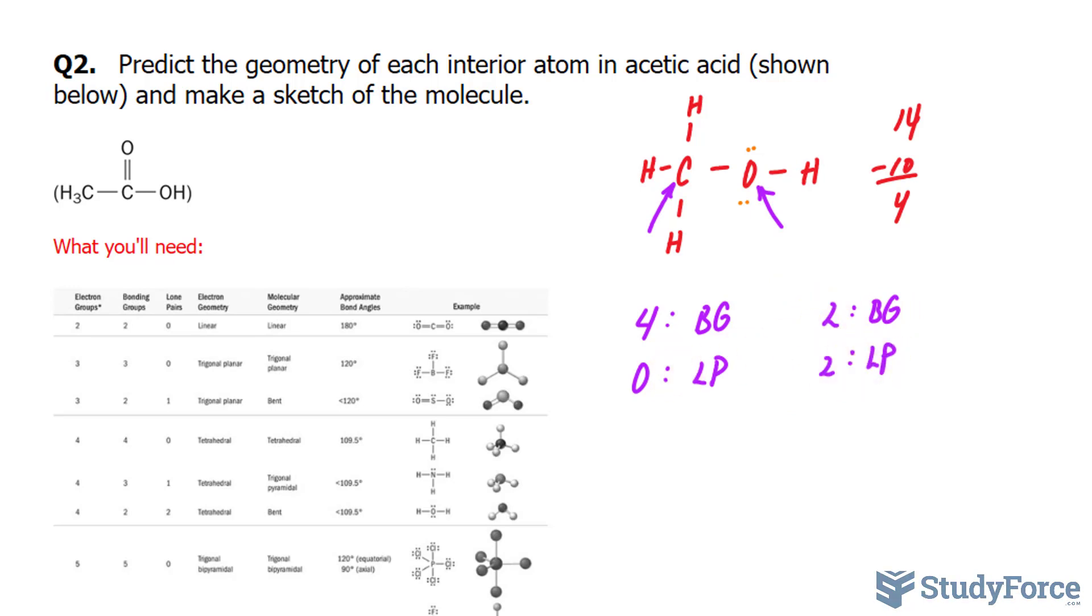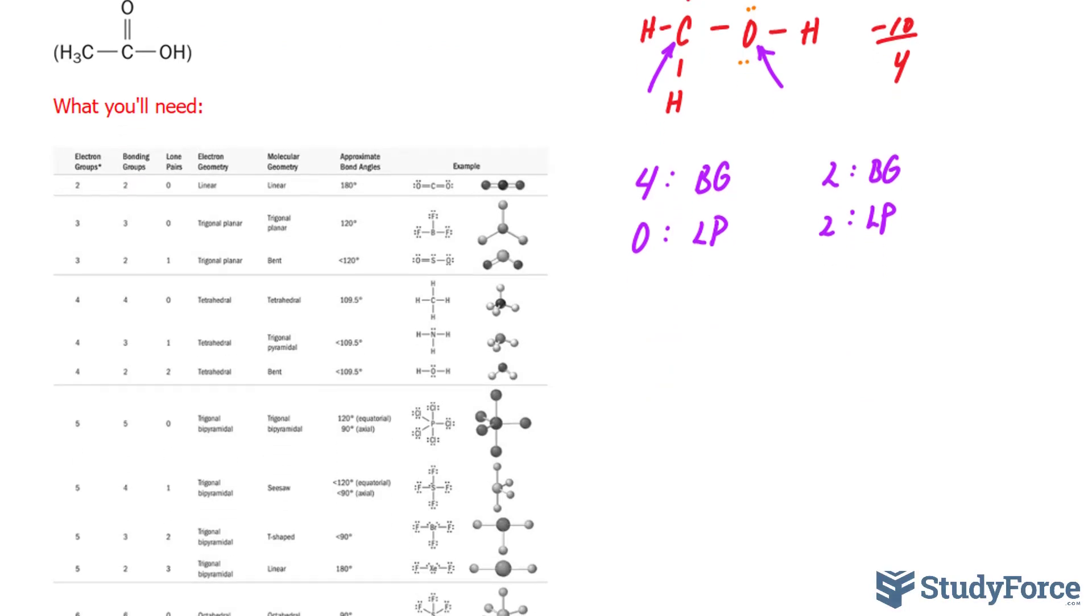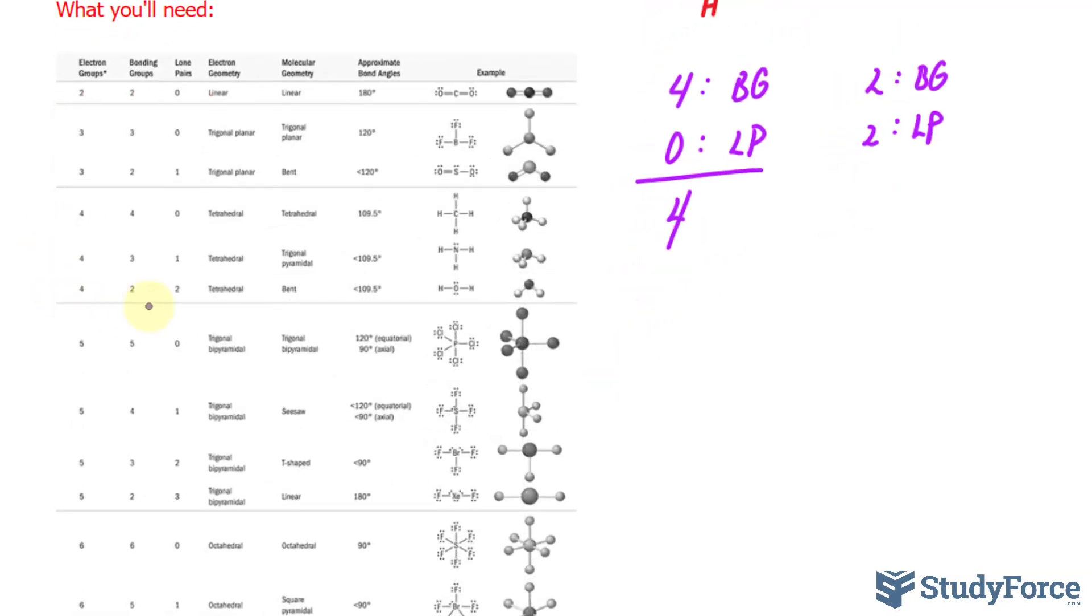Using the table provided here, I can now figure out what molecular shape each of these atoms will have. So starting with this carbon, we had four and zero, and if we add this up, we have four in total, so four electron groups. We'll focus in on here, we have four.